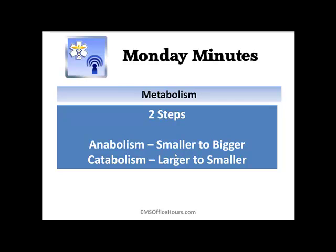There are two steps we talk about in metabolism: the anabolic and the catabolic. The anabolic is the constructive or building phase — smaller to bigger. The catabolic is the opposite — the destruction or breakdown phase, from larger to smaller. These two steps are important because this is when we talk about the distribution of nutrients in the blood, things like glucose, amino acids, and fats. So when you hear anabolic metabolism, it's small to bigger; catabolic is larger to smaller, distributing those nutrients throughout the blood.